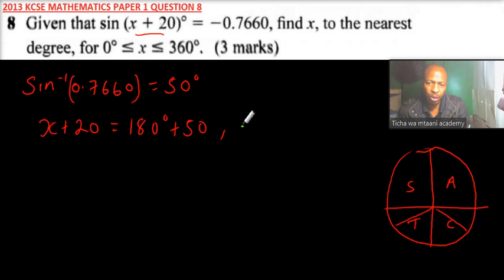And for the fourth quadrant, we get it is 360 minus 50. So that we get this angle here and this angle, which will represent the sine of minus, because our value here is minus. So you'll find that x plus 20 is equals to, when you add this, you'll get it is 230 degrees.